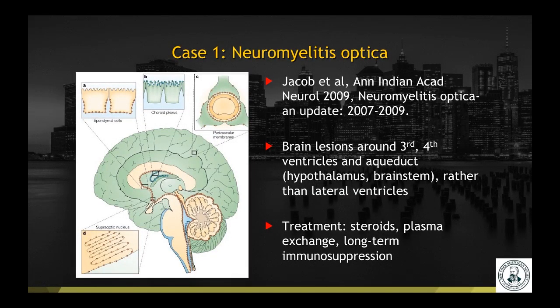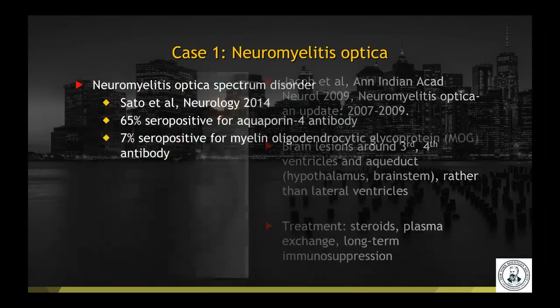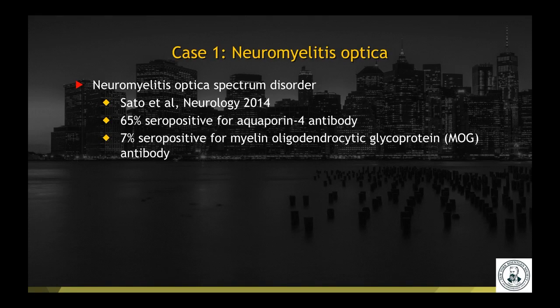Brain lesions seen in NMO differ from multiple sclerosis in that they cluster around the third and fourth ventricles as well as the aqueduct, whereas lesions in multiple sclerosis tend to be along the lateral ventricles. Treatment involves steroids, plasma exchange, as well as long-term immunosuppression. In NMO spectrum disorder, many patients have seropositivity for aquaporin-4, but there is also a small subgroup that are seropositive for MOG antibody — myelin oligodendrocytic glycoprotein.